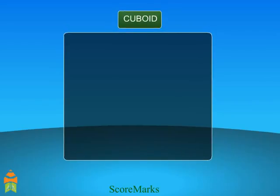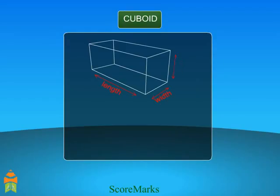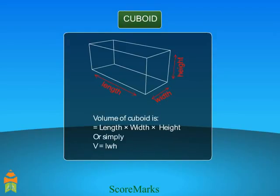Volume of cuboid is equal to length into width into height, or simply V equals LWH.